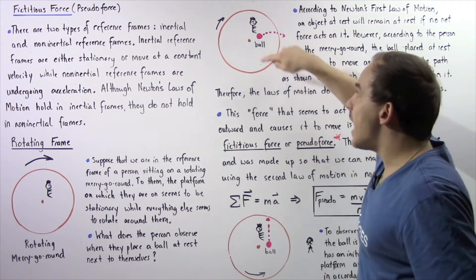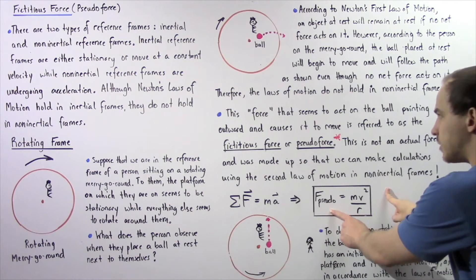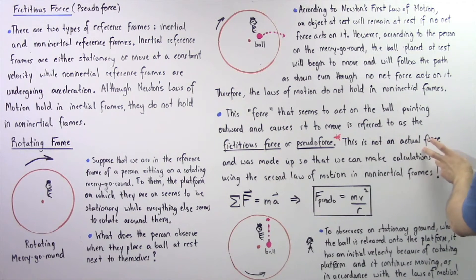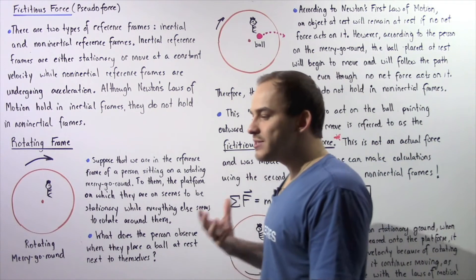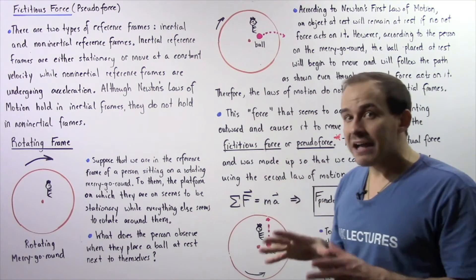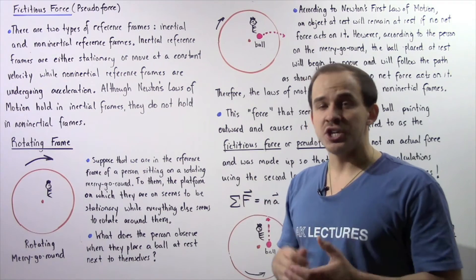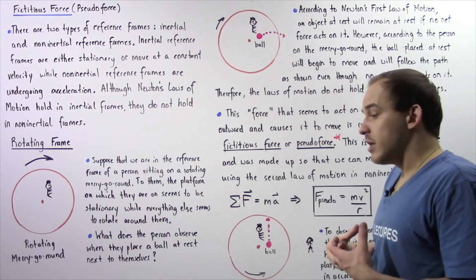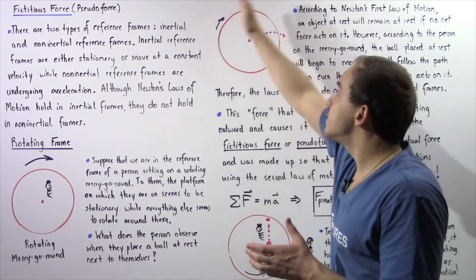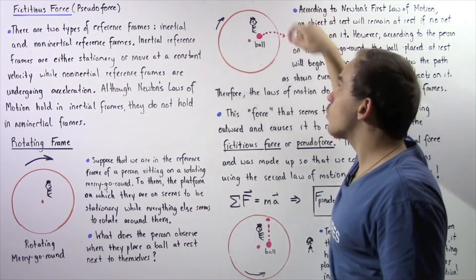So if we're inside the non-inertial reference frame, the force causing this object to accelerate is given by that equation. Once again, this is not an actual force — it was introduced so that we can make calculations using the second law of motion inside non-inertial reference frames. The question still remains: if this force isn't the actual force causing this object to move, what is? The reason that object begins to move is because the reference frame itself is accelerating. As a result of the acceleration of this frame, our ball will move.